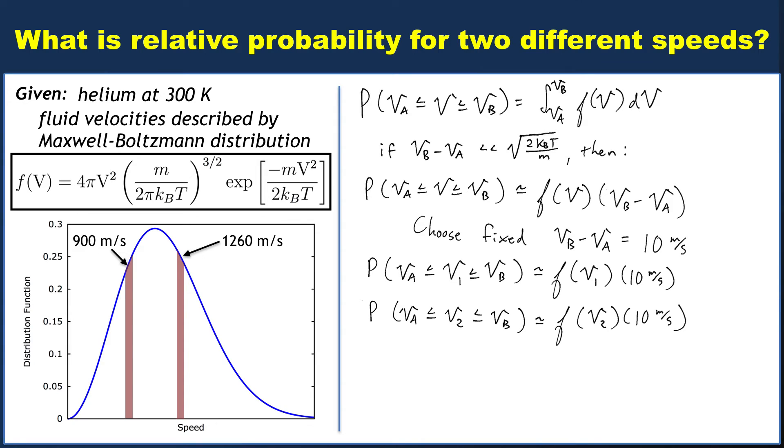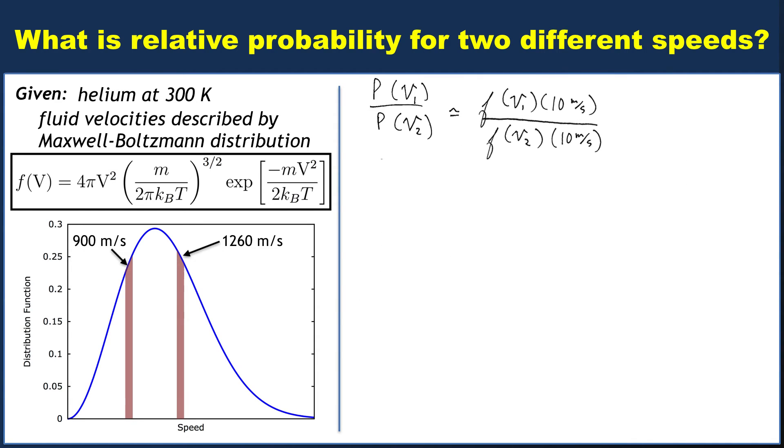Well, the nice thing about this is that it's not important that we chose 10 meters per second. As long as we're interested in a narrow range around the velocity of interest, then if we compute a probability ratio, the probability of finding V1 compared to the probability of finding V2, that'll just be the ratio of the distribution functions each times 10 meters per second, but now we can cancel the 10 meters per second.